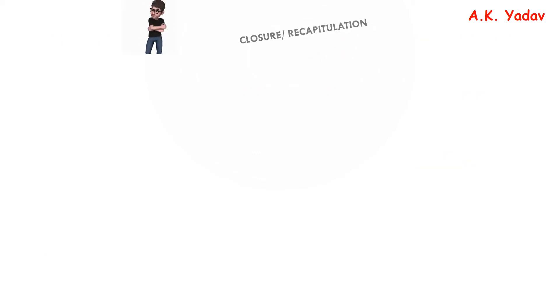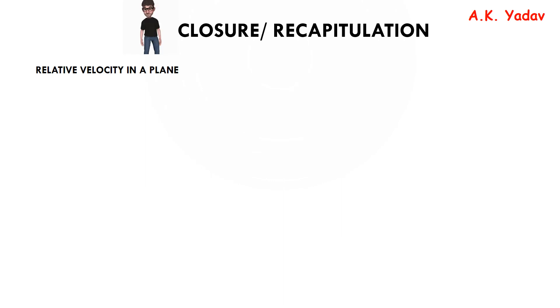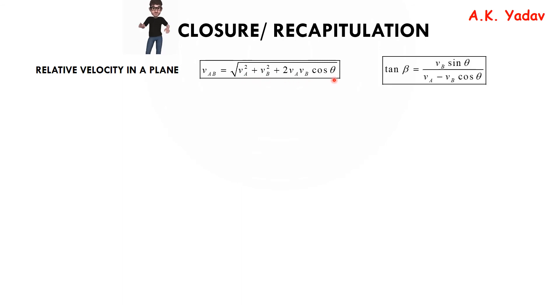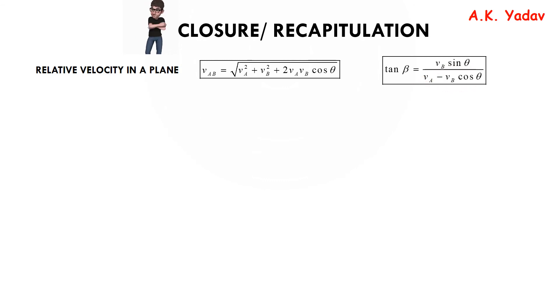Now is the time for recapitulation. Relative velocity in a plane: vab = √(va² + vb² + 2·va·vb·cosθ), and tan β = vb·sinθ / (va − vb·cosθ).